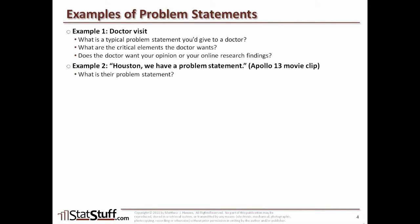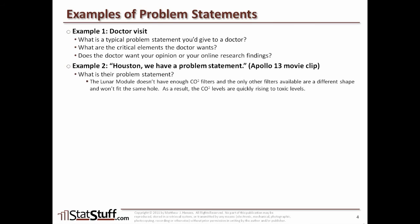From that video clip, we might ask ourselves what's the problem statement for the problem they were facing. There are lots of ways it could be written, but here's one possible problem statement: the lunar module doesn't have enough CO2 filters, and the only other filters available are a different shape and won't fit the same hole. As a result, the CO2 levels are quickly rising to toxic levels. I'm not including all the data, but by identifying that something doesn't fit the other shaped hole for the CO2 filter and that it's rising to toxic levels, it indicates this is significant.